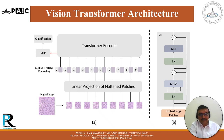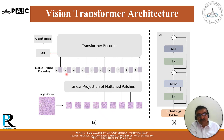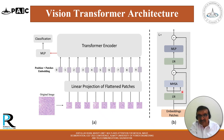The vision transformer architecture is used in this work. The original image is divided into patches, linearly projected, and the flattened patches are concatenated with positional encodings and given to the transformer encoder. The transformer encoder consists of normalization, multi-head attention, again normalization, and an MLP. This encoder block can be repeated L times.